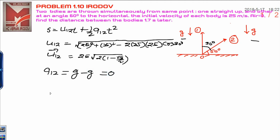Now the distance between 1 and 2 can be calculated as velocity, that is 25√(2(1 - √3/2)), times the time 1.7 seconds.